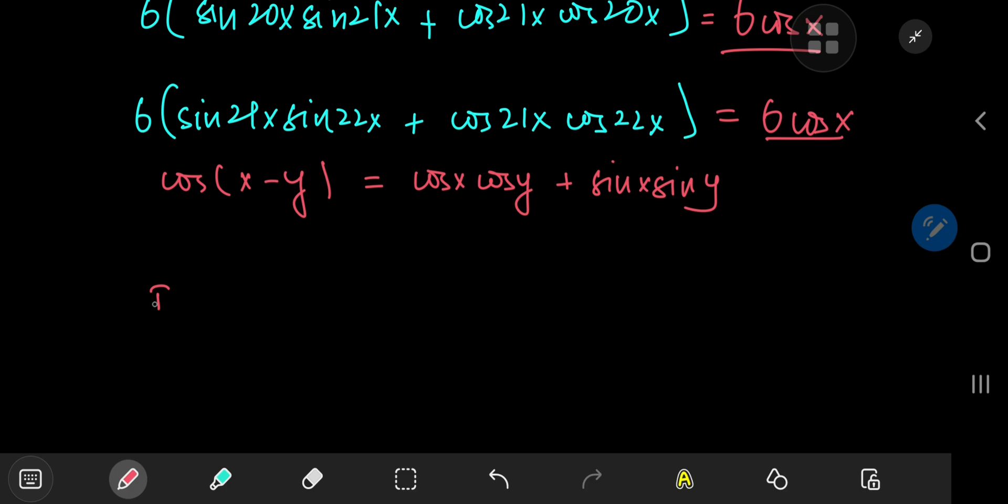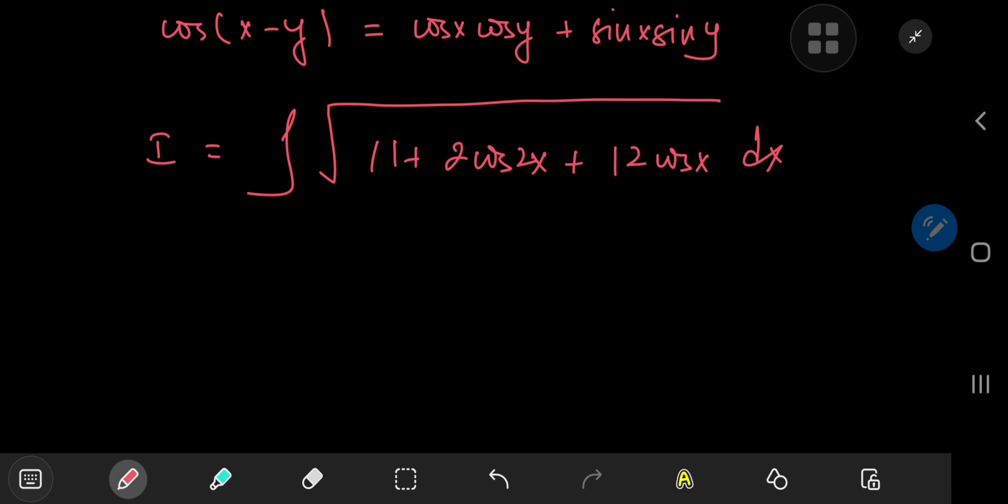So we can call the integral I, and this reduces to the integral of the square root of 11 plus 2 times the cosine of 2x, plus adding up the 2 six times cosine x terms, we get 12 times the cosine of x, and we're integrating with respect to x, of course.